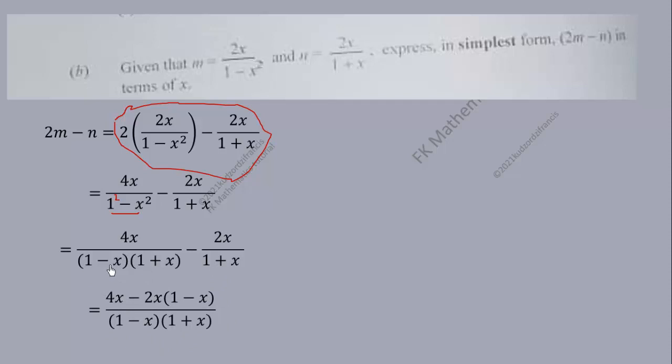Now when 1 minus x comes here, when this comes here, everything goes. So we have 1 times 4x which is 4x. Then we have 1 plus x. When it comes here, this will go. We are left with 1 minus x times the 2x.